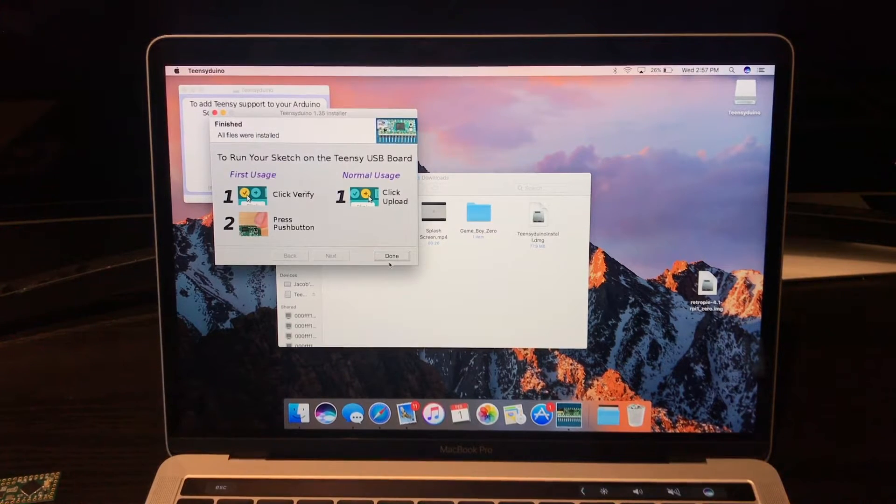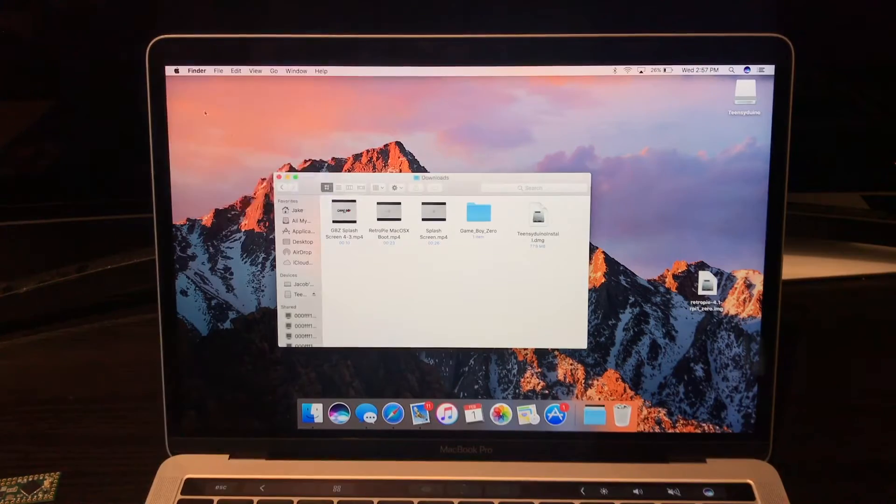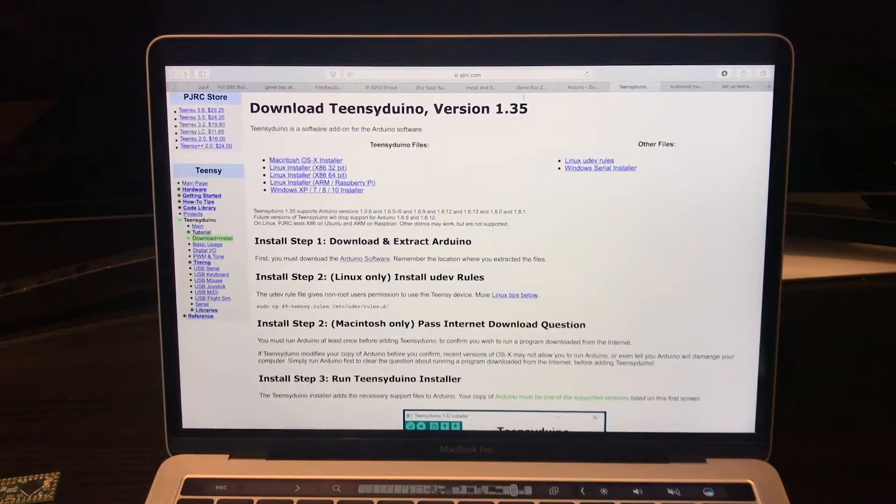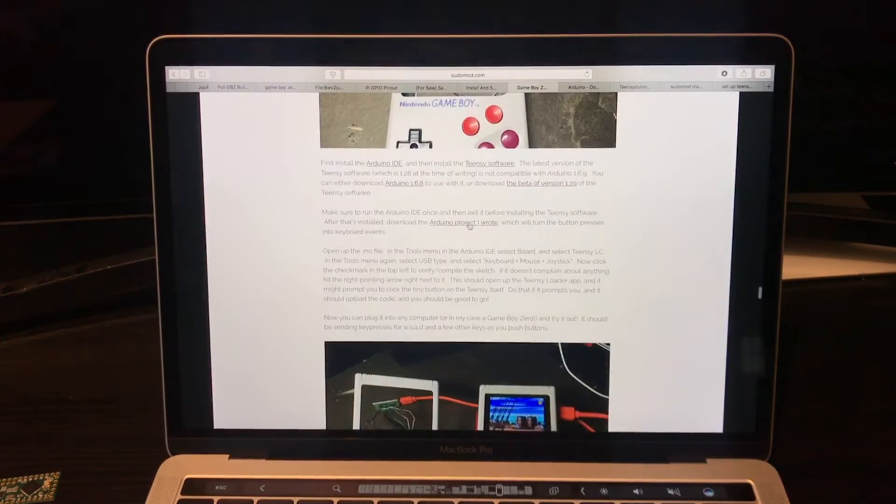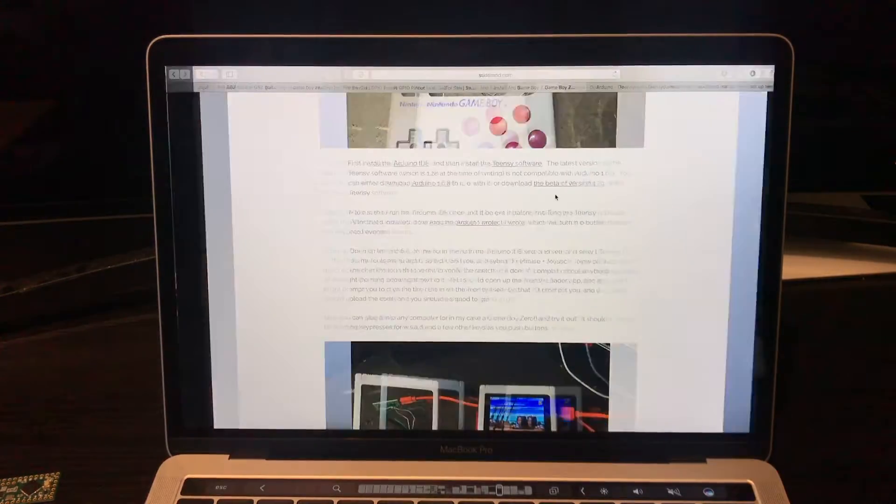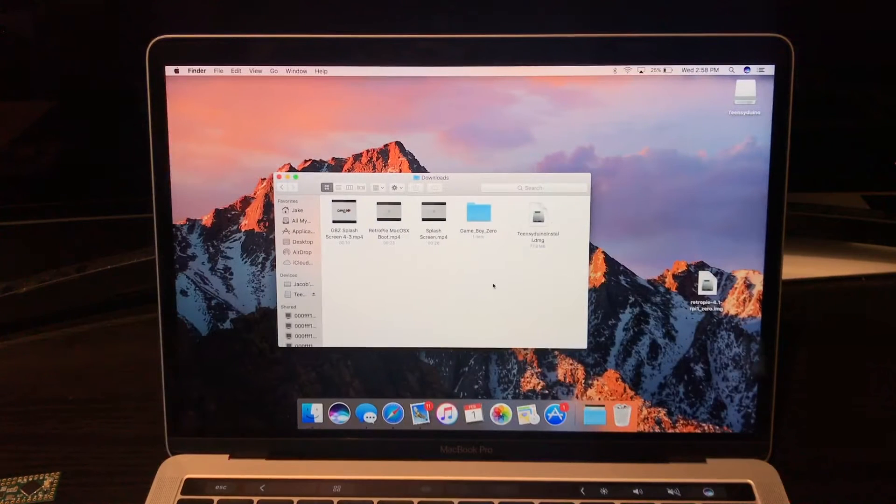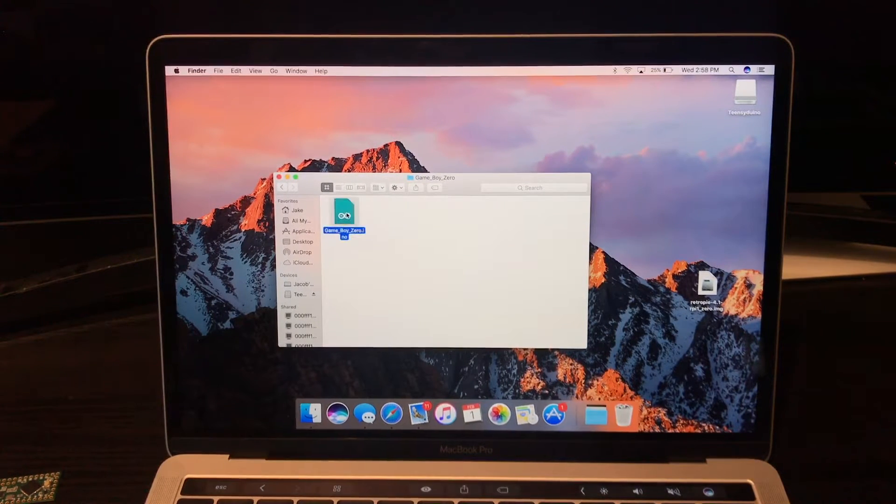Once you have those two downloaded, you're going to want to open Arduino, and you should be greeted with the screen. Once you have this screen, you can then close out of it, and then install the Teensy Duino. Once it's finished installing, we can exit out of that, and then we're going to want to head over to the Sudomod blog post from Wermy of his install. And he has an Arduino project that he wrote that we're going to want to download. Once you have that downloaded, it should be in your downloads folder. So go ahead and open that up.